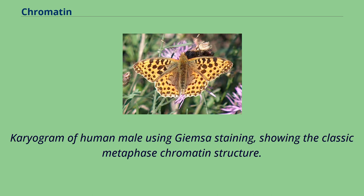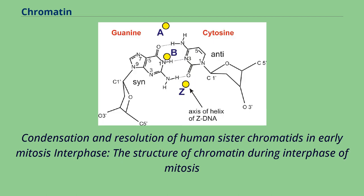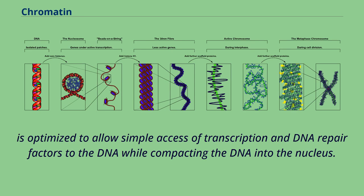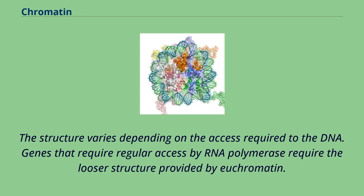A karyogram of human male using Giemsa-staining shows the classic metaphase chromatin structure. Chromatin undergoes condensation and resolution during early mitosis. During interphase, the structure of chromatin is optimized to allow simple access of transcription and DNA repair factors to the DNA while compacting the DNA into the nucleus. The structure varies depending on the access required to the DNA. Genes that require regular access by RNA polymerase require the looser structure provided by euchromatin.